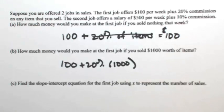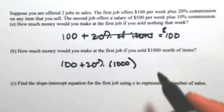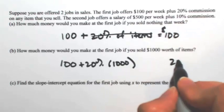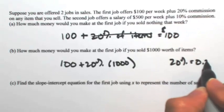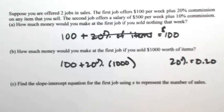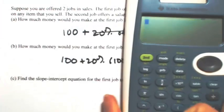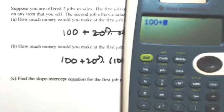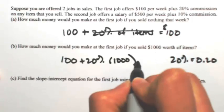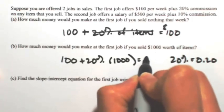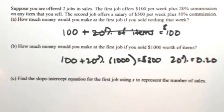20% — if you want to put that in your calculator, treat it as a decimal. So 20% is the same thing as .20. In your calculator you can do 100 plus .20 times 1000, and you are going to make $300.